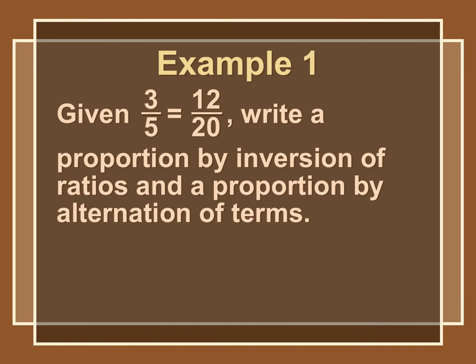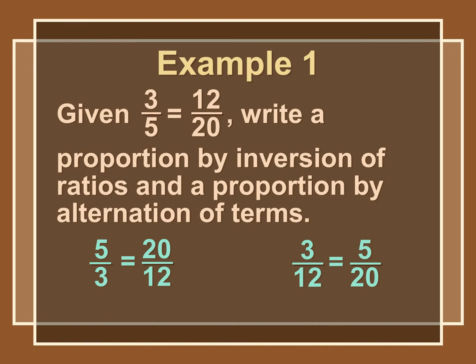Let's do an example. We have 3 over 5 equals 12 over 20, and we want to write a proportion by inversion and a proportion by alternation of terms. If we invert, we take the reciprocal and get 5 over 3 equals 20 over 12. If we alternate the terms, we alternate the second and third terms and get 3 over 12 equals 5 over 20.